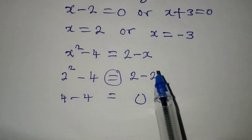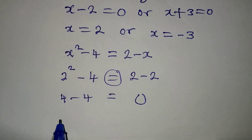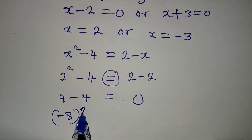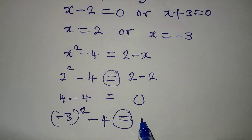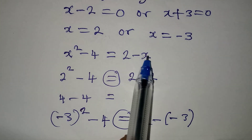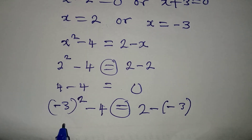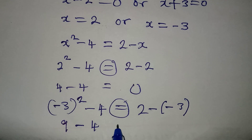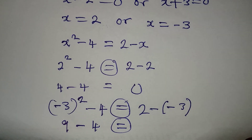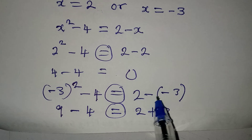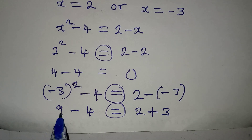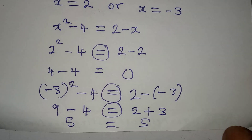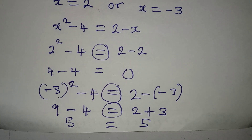Now let's check the second value of x, which is minus 3. In place of x squared, I have minus 3 in brackets, squared, then minus 4. On the right hand side we have 2 minus minus 3, because x is minus 3. Minus 3 squared gives positive 9, and then minus 4. On the other side we have 2 plus 3, because negative times negative gives positive. So 9 minus 4 gives 5, and 2 plus 3 gives 5, meaning both solutions satisfy the equation. Thank you for watching.